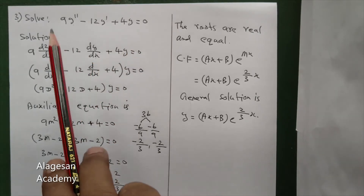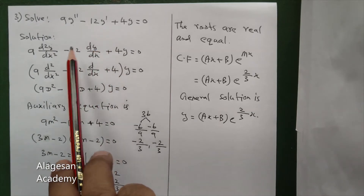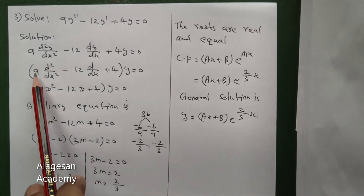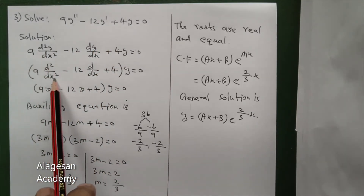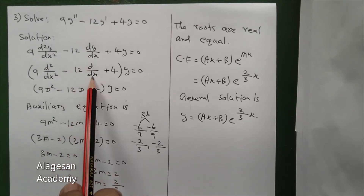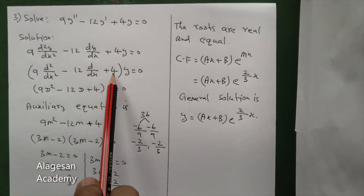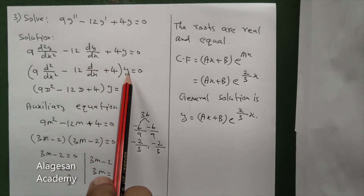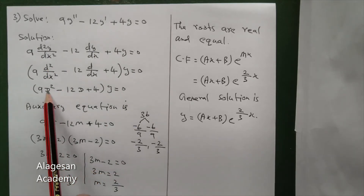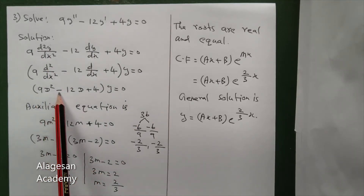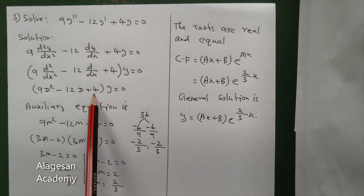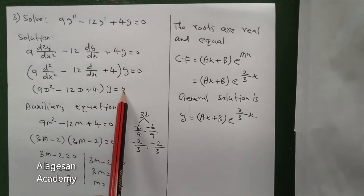This step is clear. Next, take y alone out. So: d squared by dx squared minus 12 d by dx plus 4, into y is equal to 0. Replace d squared by dx squared with capital D squared. So: 9 D squared minus 12D plus 4, into y is equal to 0.